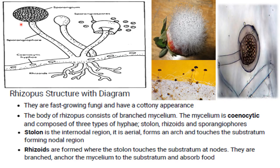Coming to the morphology of Rhizopus: they are fast-growing fungi with a cottony appearance. The body consists of a branched mycelium, which is coenocytic — meaning there is no septa — and is composed of three types of hyphae: stolon, rhizoid, and sporangiophore.